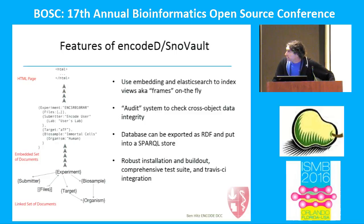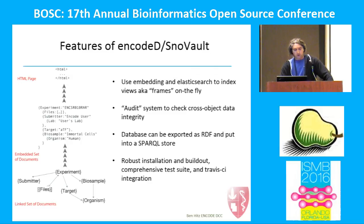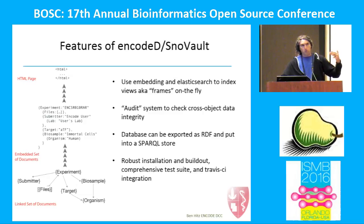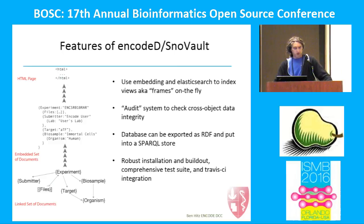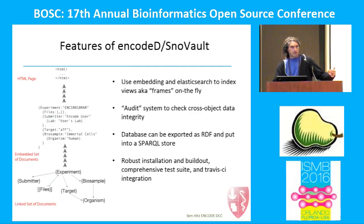The coolest part is that we embed the linked data in different frames in the object. You can imagine a set of objects as an experiment with a bunch of linked objects associated with it. Whenever we receive a new object, we actually index it with parts or all of the linked objects associated with it together, and this is all indexed on the fly in Elasticsearch whenever anything changes. JSON Schema doesn't really validate across object types or across linked data, so we wrote an auditing system where each object that gets input has a little bit of Python run on it, and it gets decorated with errors and warnings in case there are discrepancies between the metadata. Because it's in JSON-LD, you can just export it as RDF and put it in a SPARQL store.